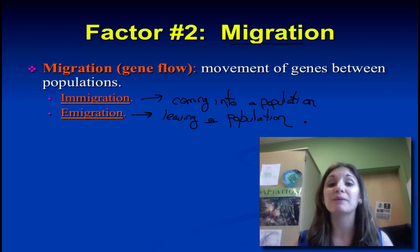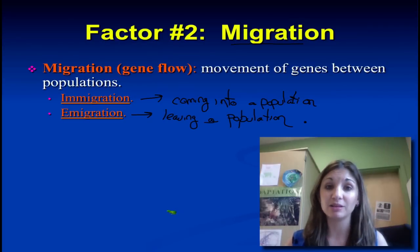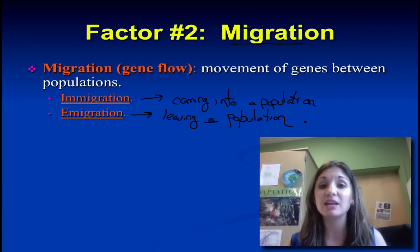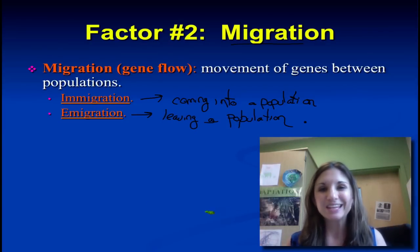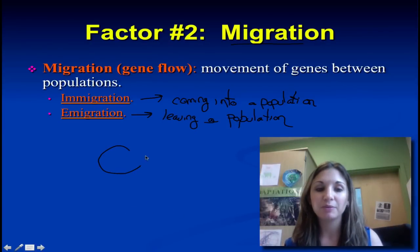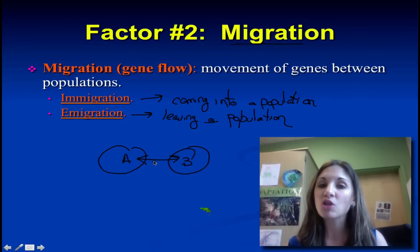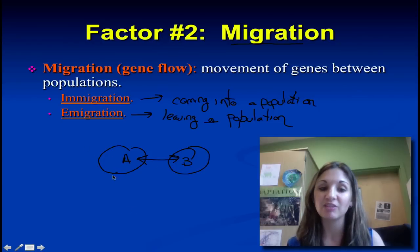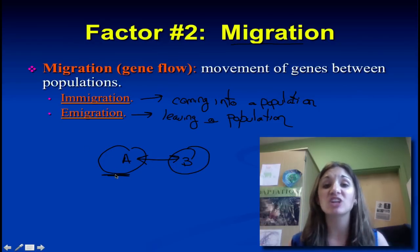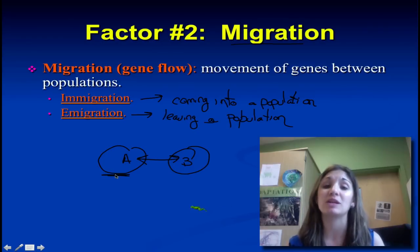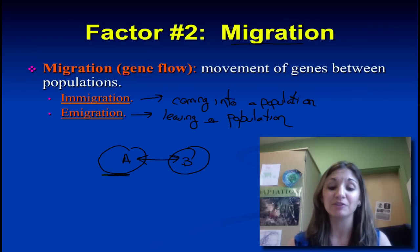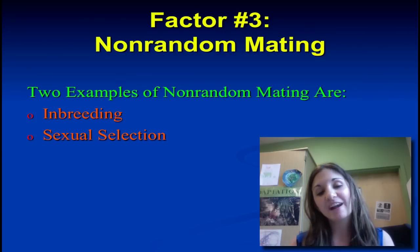Each population is specialized for its particular environment and since it's mating within itself, those favorable traits increase in frequency. But if we have population A and population B with gene flow between them, we no longer have just the genes that have become favorable for A staying in A. It tends to eliminate differences between populations when we have high levels of immigration.